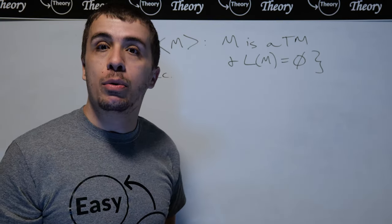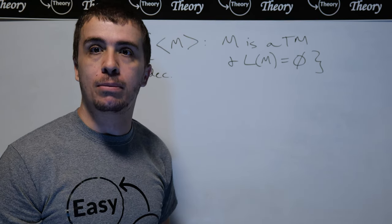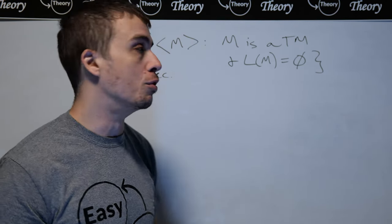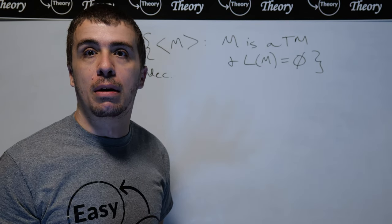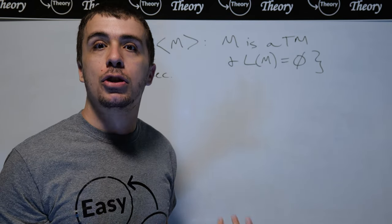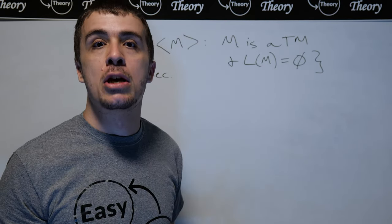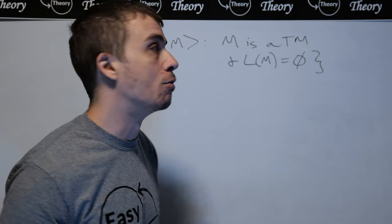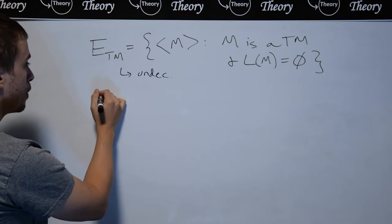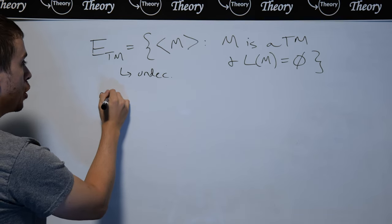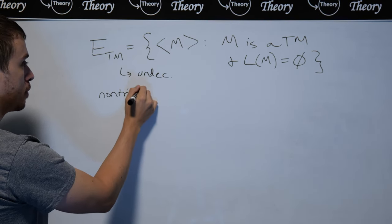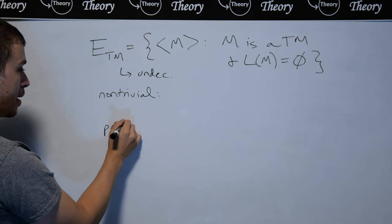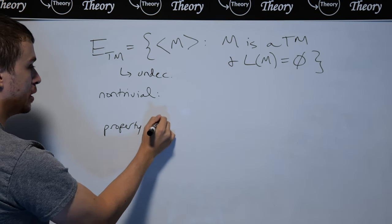What I want to do here is apply Rice's theorem to this language to get a much easier proof. To apply Rice's theorem, you have to show that this language is a non-trivial property of Turing machine languages. So we need to show that it's non-trivial, and that it's a property of Turing machine languages.